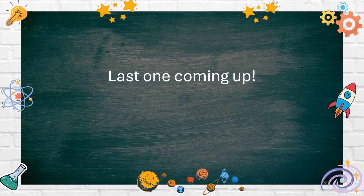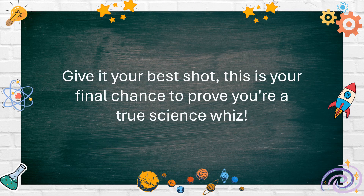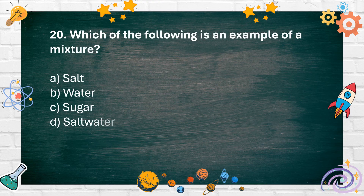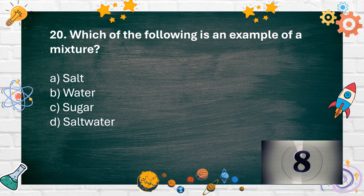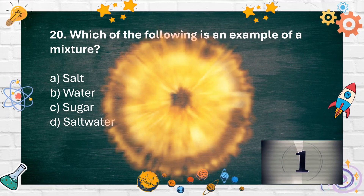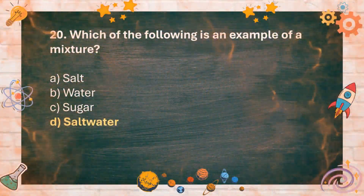Last one coming up. Give it your best shot. This is your final chance to prove you're a true science whiz. Number 20. Which of the following is an example of a mixture? A. Salt, B. Water, C. Sugar, D. Saltwater. The answer is D. Saltwater.